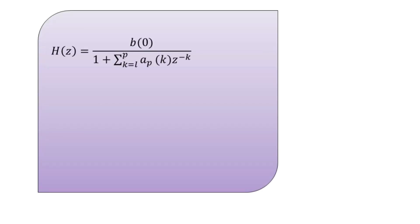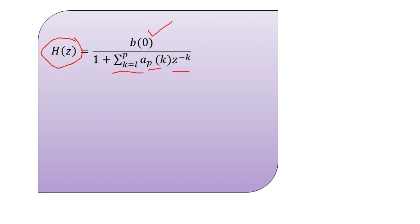The modified filter equation gives H(Z) as the ratio where the numerator is simply B(0), and the denominator is 1 plus the summation from K=1 to P of A_xP(K) times Z to the power minus K. In general, ARMA(P,0) can simply be written as AR(P), which is our topic of interest: the auto-regressive process.